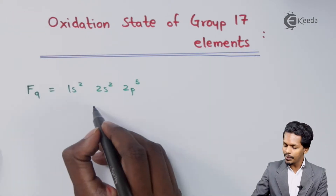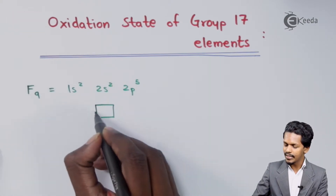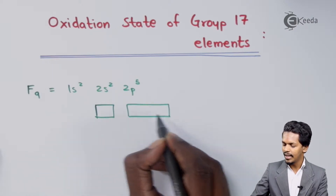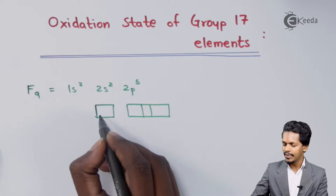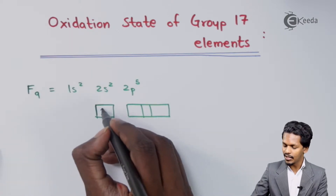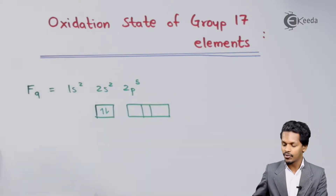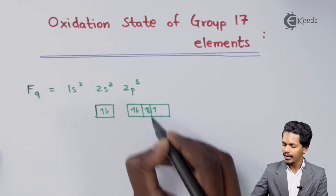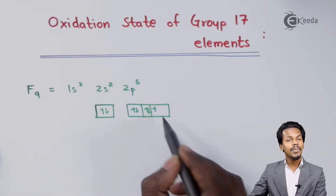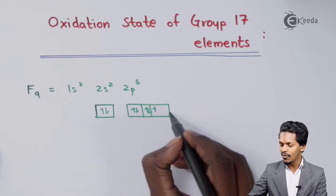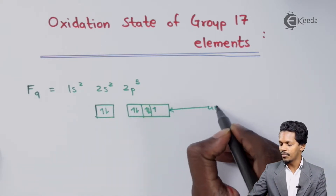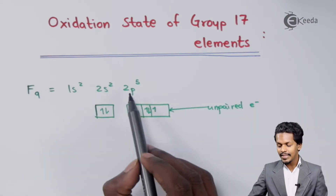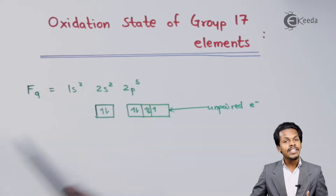So we are talking about the orbitals. We will get to know that it consists of an S subshell and a P subshell. For that we have 2 electrons in the S orbital and 5 electrons in the P subshell, with 1 unpaired electron. So this Fluorine has basically 5 electrons in the P subshell.